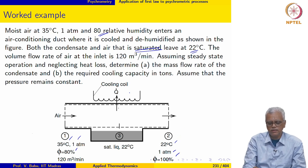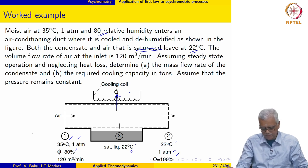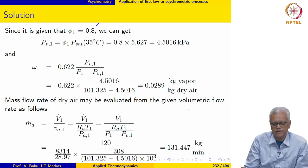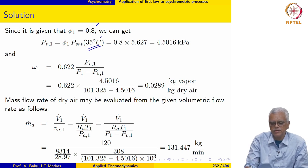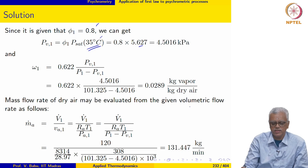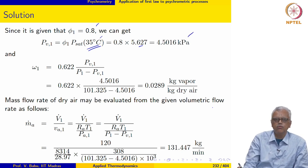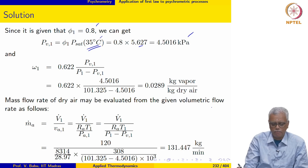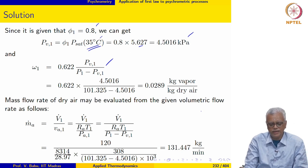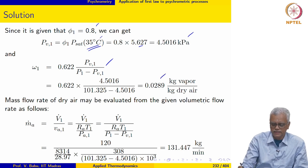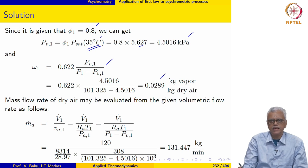As a result of heat removal, some water vapor condenses and is collected as saturated liquid at 22°C. At the inlet, relative humidity is 0.8. From the temperature table, the saturation pressure at 35°C is 5.627 kPa, so the partial pressure of water vapor at the inlet works out to 4.5016 kPa. The humidity ratio ω₁ at the inlet is then 0.0289 kg vapor per kg dry air.